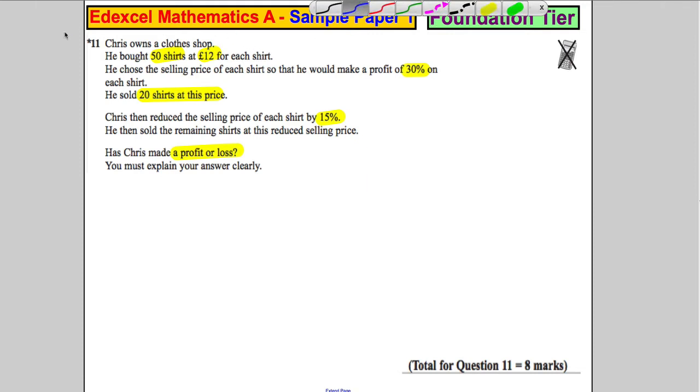The first thing is let's start here. That tells us how much Chris paid for all the shirts. So the cost of his shirts - it's a good place to start, that will certainly get a mark - is 50 multiplied by £12. Now the easiest way I like to do this is 50 times 10 is 500 and 50 times 2 is 100. So this must be equal to £600.